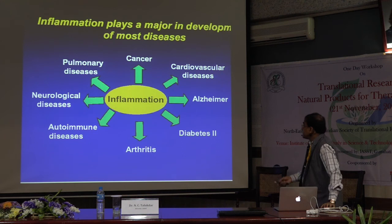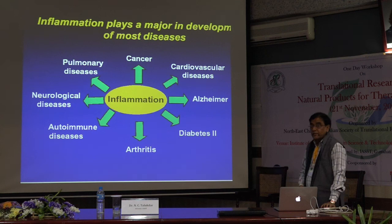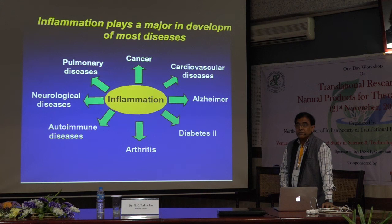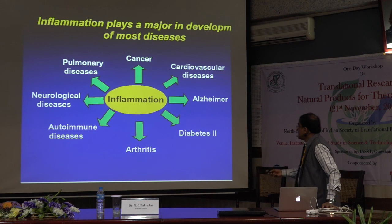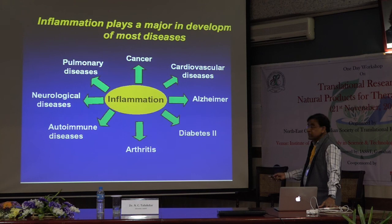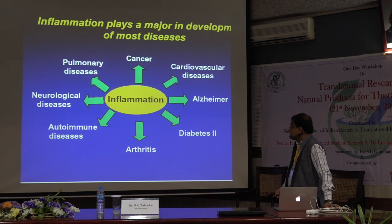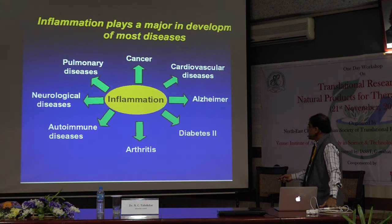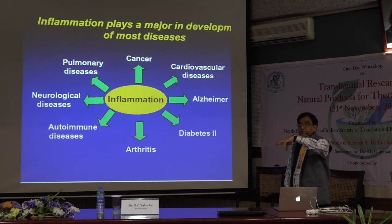Coming to natural products: natural product derived compounds, single molecules, combinations of molecules, Ayurvedic biology — they are playing a very important role. Similarly, you can see that inflammation connects with pulmonary disease, neuronal disorders, dementia, Alzheimer's, Parkinson's — these are major issues across the globe and in India. Autoimmune diseases, arthritis, osteoarthritis, rheumatoid arthritis — they are very important, with many pro-inflammatory genes and proteins present when patients develop arthritis in that synovial fluid.